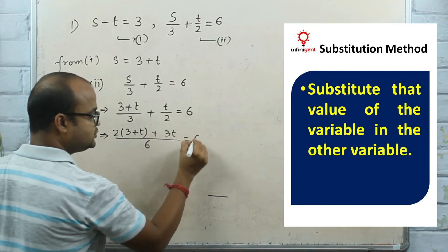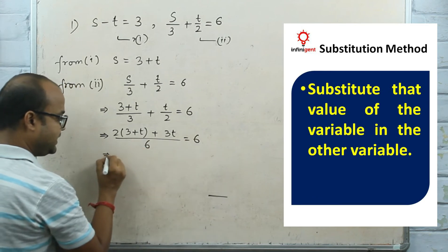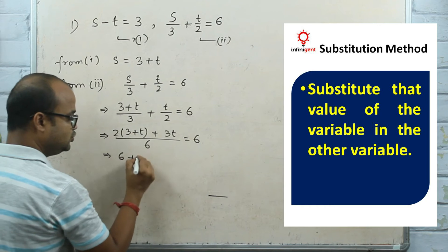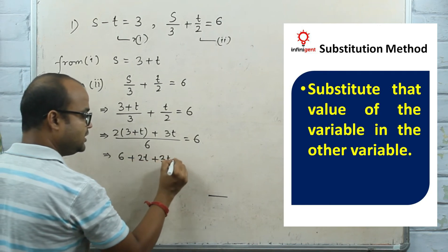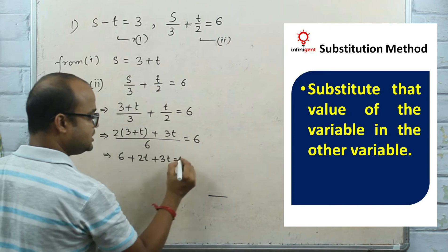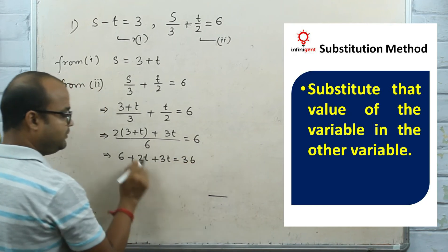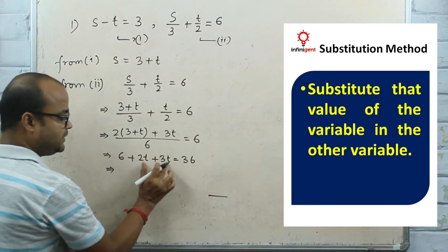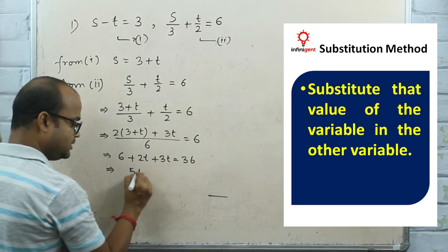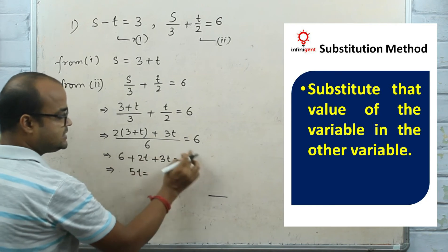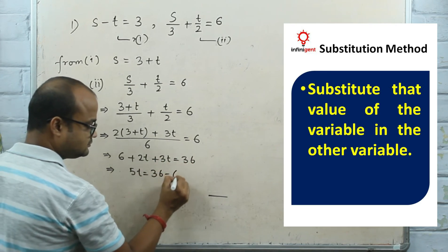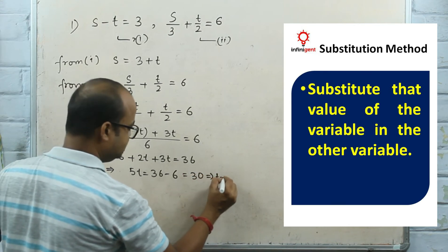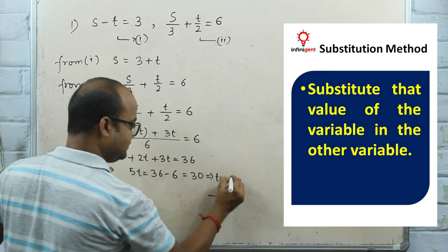Cross multiply: 6 + 2T + 3T = 36. So 2T + 3T = 36 - 6, which equals 30. 5T = 30, therefore T = 6. So you get the value of T equals 6.